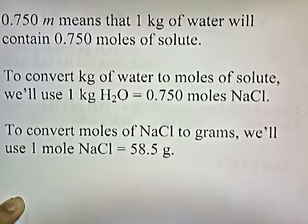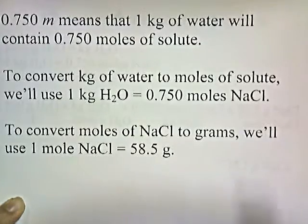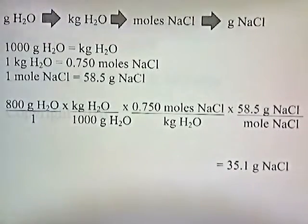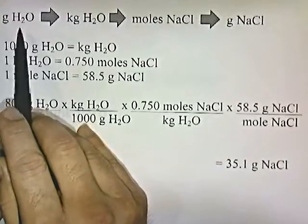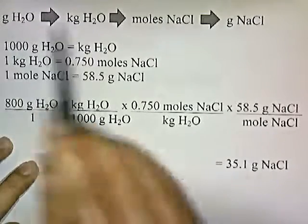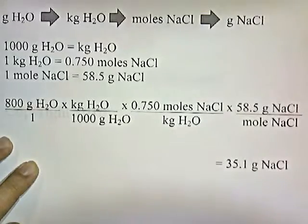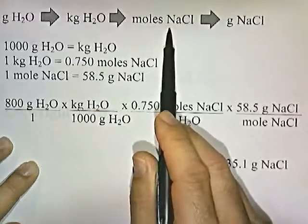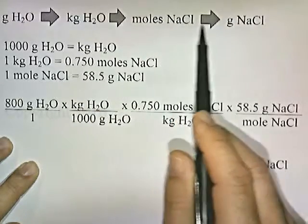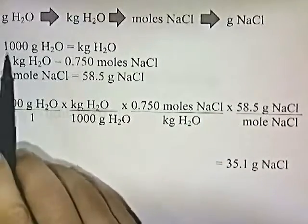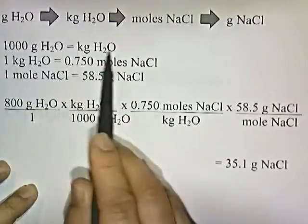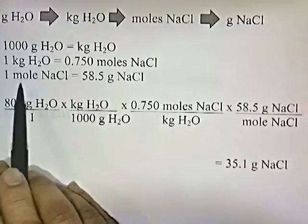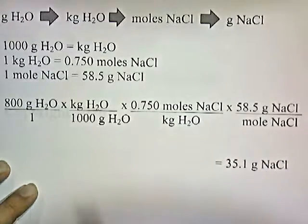To convert moles of NaCl to grams, we'll use 1 mole of NaCl is 58.5 grams. So the overview is: they gave us grams of water, and we want to know how many grams of NaCl are dissolved in it. We convert grams of water into kilograms of water, then kilograms of water into moles of NaCl, then moles of NaCl into grams of NaCl, using these three equalities: 1,000 g water = 1 kg water; 1 kg water contains 0.75 moles NaCl; 1 mole NaCl = 58.5 g NaCl.